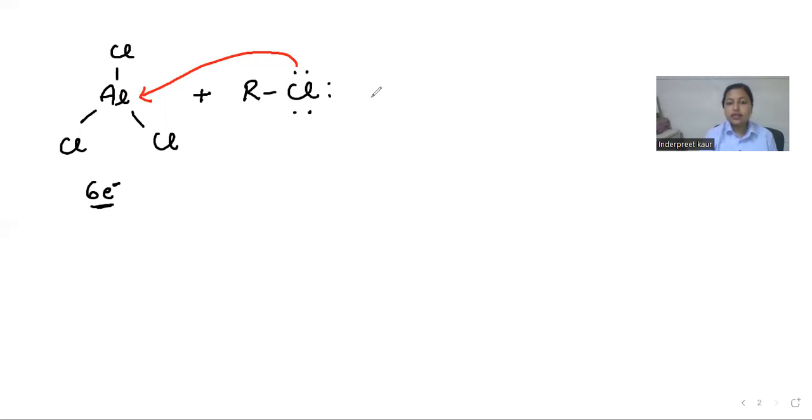So now, what will I get? From aluminium, what will you get? AlCl4 with four chlorines, and because it has accepted electrons from chlorine, there will be a negative charge on aluminum.